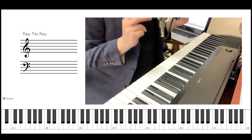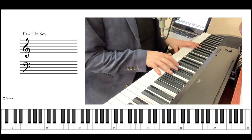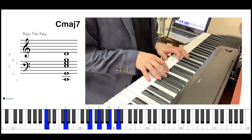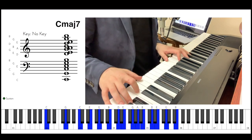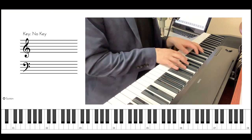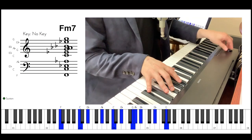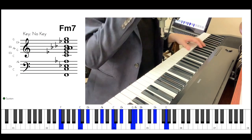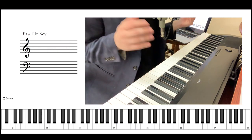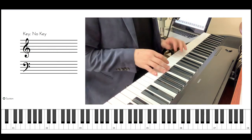Imagine we have to solo over two chords: C major 7 and F minor 7. So C major 7 is simple — it's the first chord, it's going to get the Ionian chord scale.